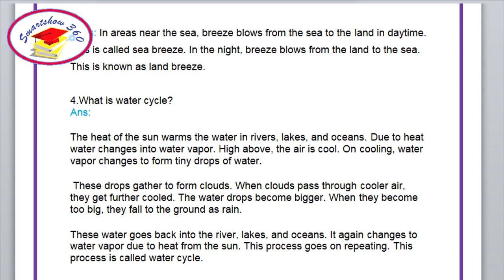Question number 4 and 5. What is the water cycle? Answer: The heat of the sun warms the water in rivers, lakes and oceans. Due to heat, water changes into water vapor. High above, the air is cool. On cooling, water vapor changes to form tiny drops of water. These drops gather to form clouds. When clouds pass through cooler air, they get further cooled. The water drops become bigger. When they become too big, they fall to the ground as rain. This water goes back into the rivers, lakes and oceans. It again changes to water vapor due to heat from the sun. This process goes on repeating. This process is called the water cycle.